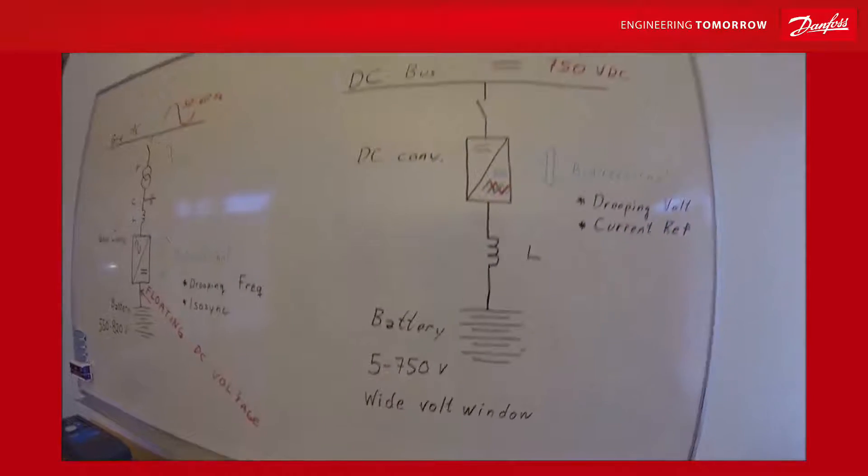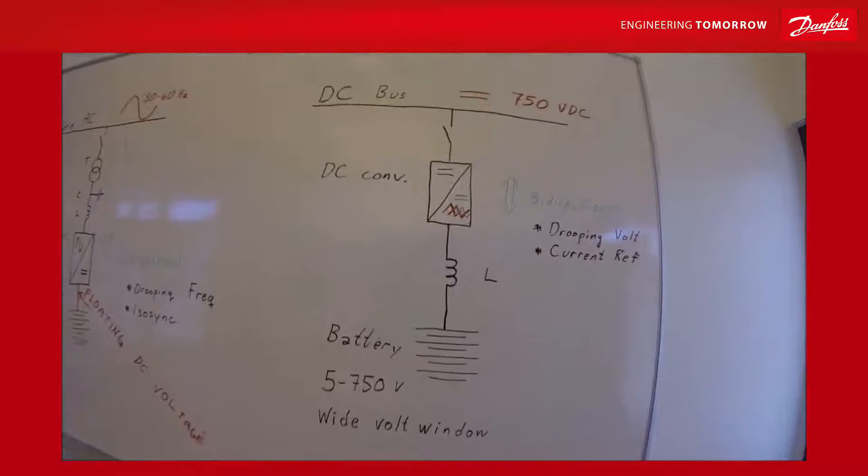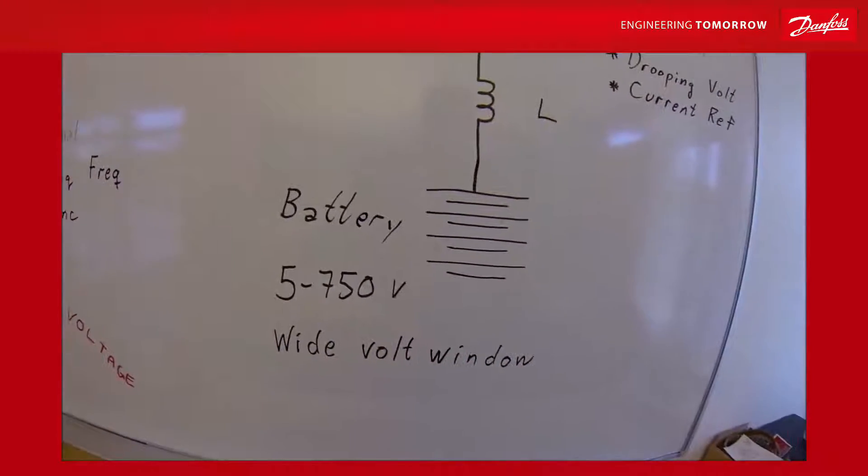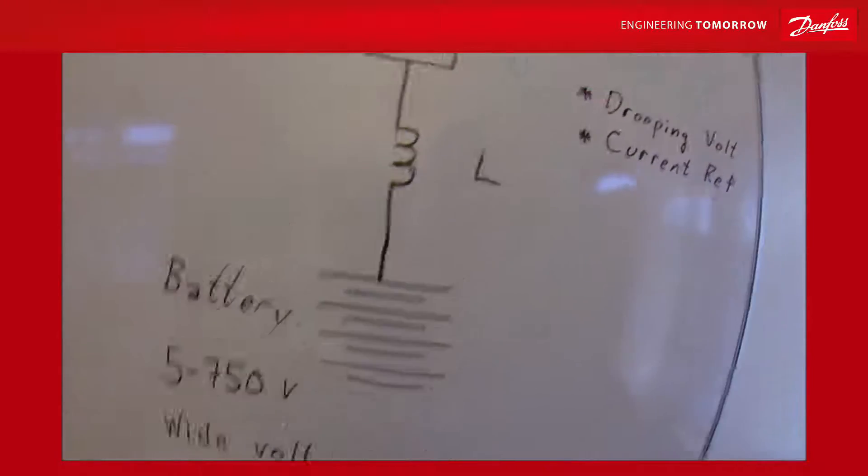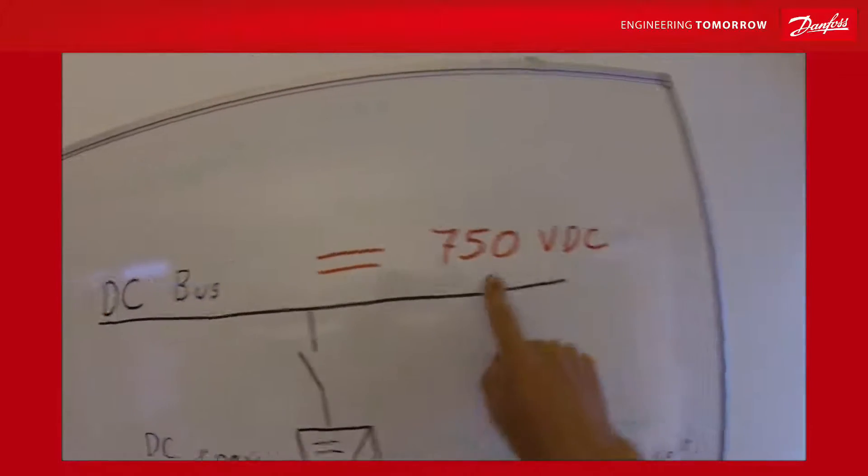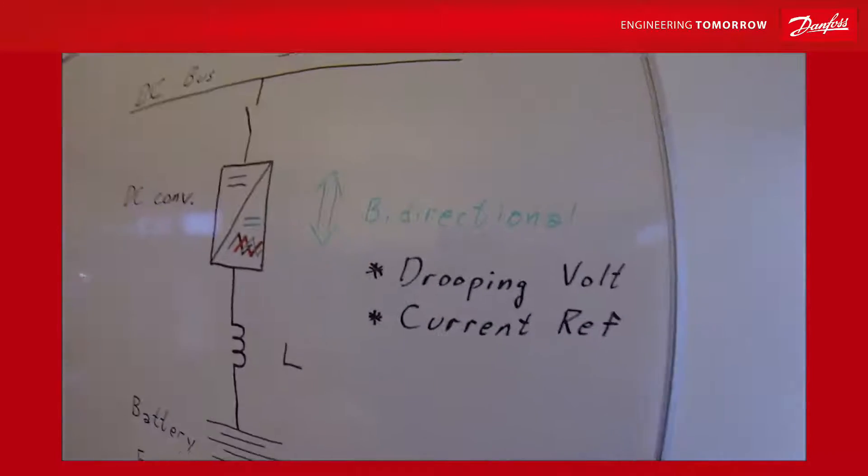One thing is batteries which is easy, but then you have fuel cells, you have solar plants, and these kind of things. Then you can have this huge range of voltage windows and you easily can adapt this to a common DC bus with a fixed voltage. How to control this thing?